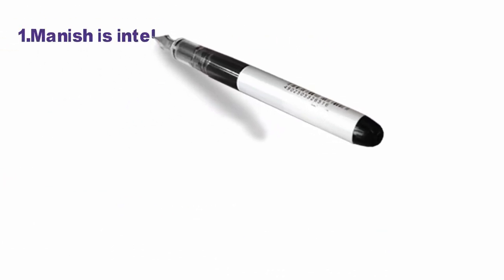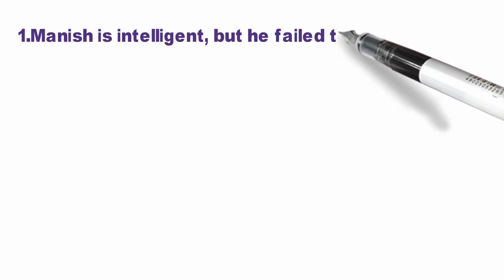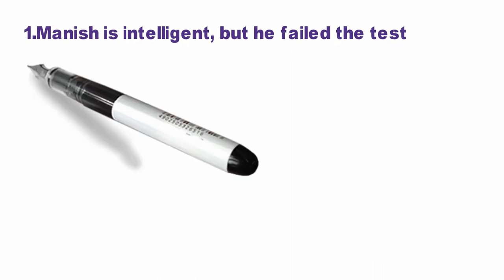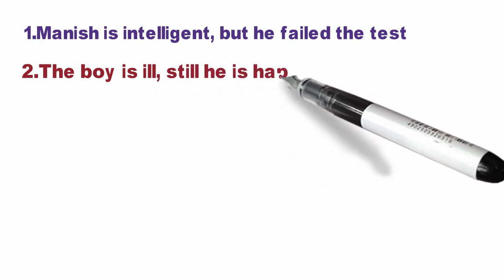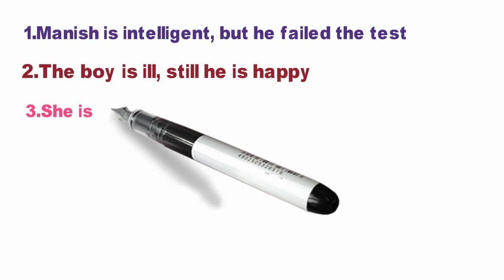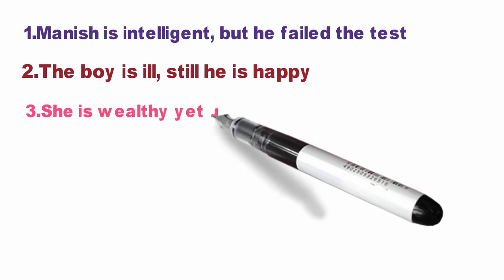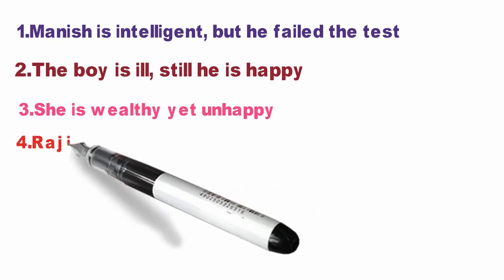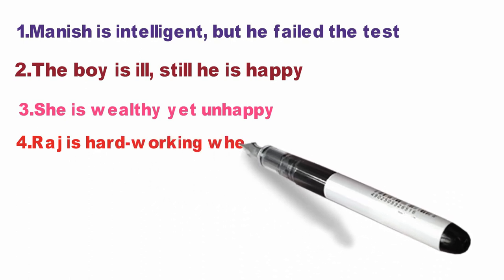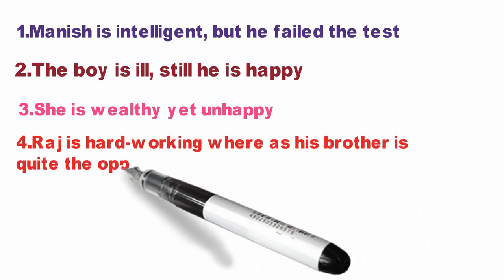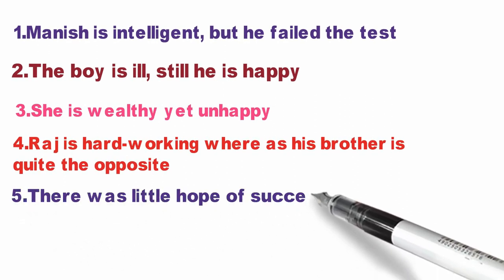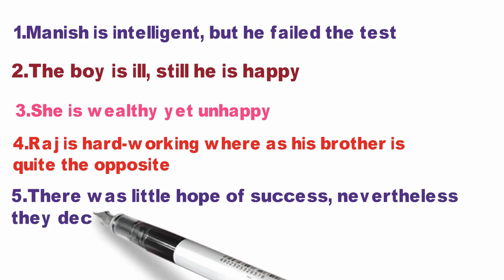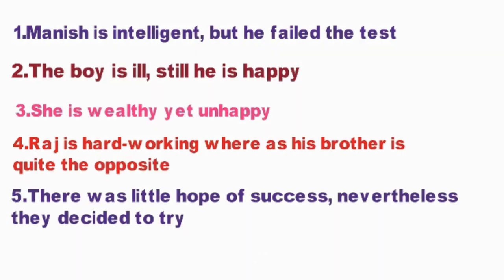Manish is intelligent but he failed the test. The boy is ill, still he is happy. She is wealthy, yet unhappy. Raj is hardworking whereas his brother is quite the opposite. There was little hope of success; nevertheless, they decided to try. If you look at all these examples, they present contrasting ideas.